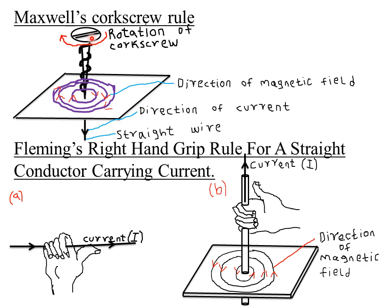If we are rotating this screw in a particular direction, we expect the magnetic field lines to be moving in a similar direction to that rotation. So if we rotate it in this direction, then the field lines rotate similarly. If we rotate it in the other direction, the field lines move in the opposite direction.